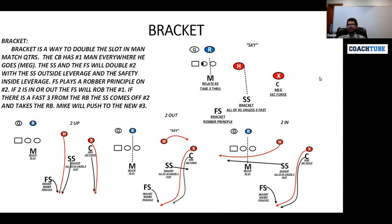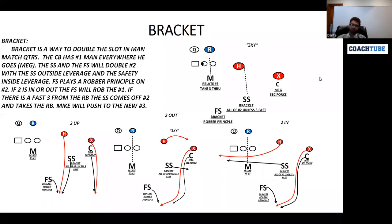If two is out or two is in, we use a robber principle to double the number one receiver. The free safety snaps his eyes to number one and is going to look to rob that receiver from the top down. He'll undercut in-breaking routes — he'll rob the post, the curl, the dig — and he'll rob the slam. He should be playing that receiver from top down.